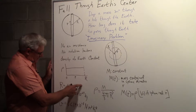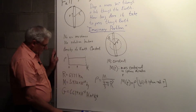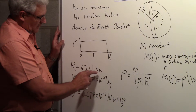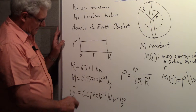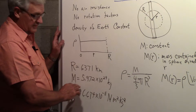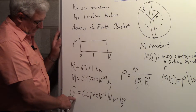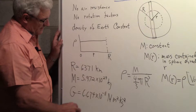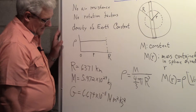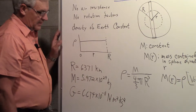Some parameters we'll need for a numerical value: the radius of the Earth is 6,371 kilometers, which we'll convert to meters. The mass of the Earth is almost 6 × 10²⁴ kilograms. And we'll need the gravitational constant: 6.674 × 10⁻¹¹ N·m²/kg².